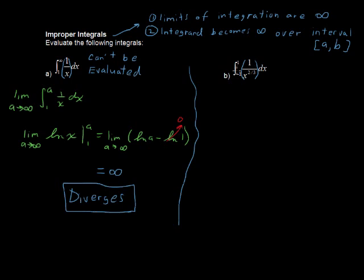And 0 is right in the middle, right smack dab in the middle, actually, of this interval. But as long as it's somewhere in there, either at the ends or somewhere in the middle, then this is improper.